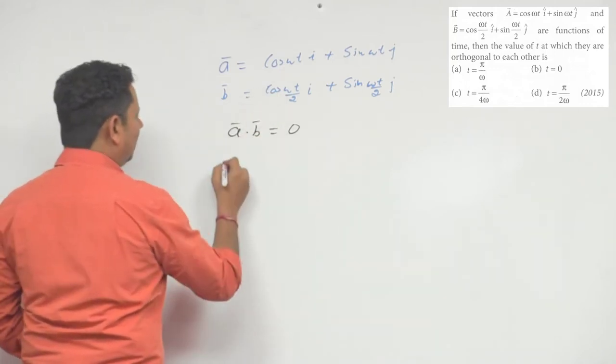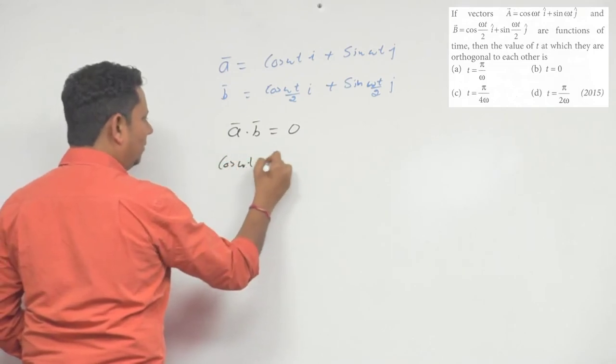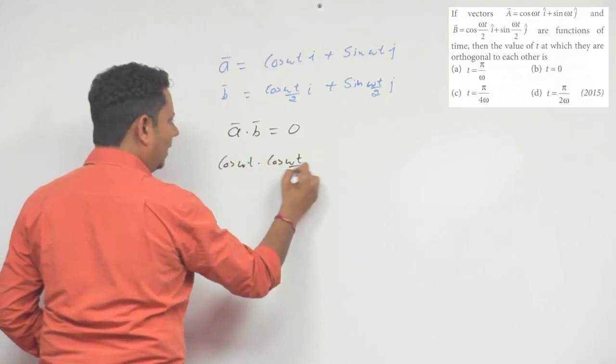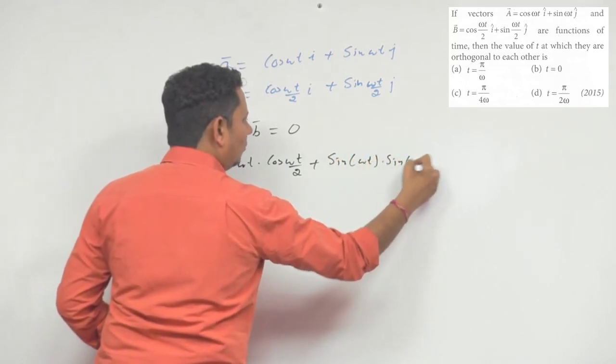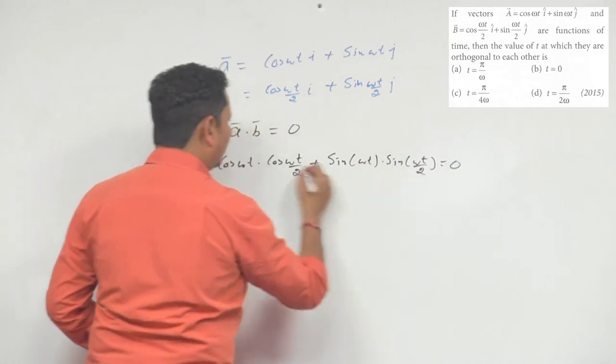a dot b अपना left hand side बनेगा cos of omega t multiplied by cos of omega t by 2 plus sin of omega t multiplied by sin of omega t by 2 will be equal to 0.